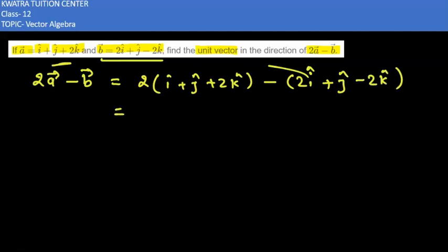Now we simplify this. We get 2i hat plus 2j hat plus 4k hat, and when we open the bracket, minus 2i hat plus minus minus.